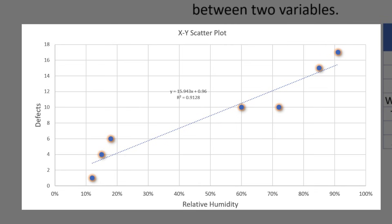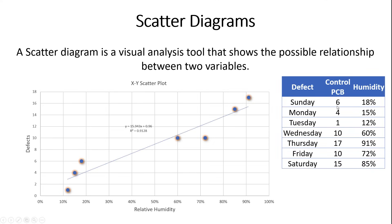To truly understand this relationship, we have to create a scatter diagram. Here's exactly what that scatter diagram looks like. We're plotting pairs of data. For example, on Sunday, we had six defects and 18% humidity. The way this scatter diagram works, or you might hear this called an XY scatter plot, is here on the x-axis, we put our controllable variable, our independent variable. And then on the y-axis, we put our response variable. We believe that relative humidity is the independent variable that is affecting our response variable, which is defects.